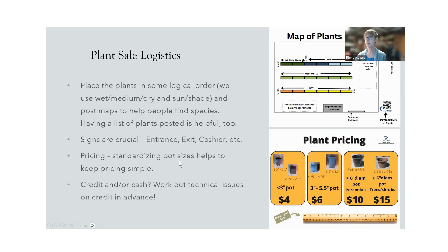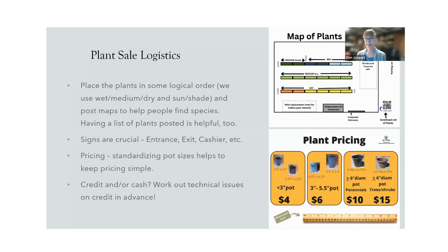We have a lot of signs. Our pricing sign shows small, medium, and large pots to scale — with a ruler the right size so people can actually measure the pot they've got. One issue every year is credit sales. We want to be able to do credit card sales, but we always seem to have technical problems. We had three credit card readers last year for three cashiers, and I think only one or two worked for a while, so we ended up doing a lot of cash. We're getting a portable hotspot this year hoping that will help with the connectivity issues.